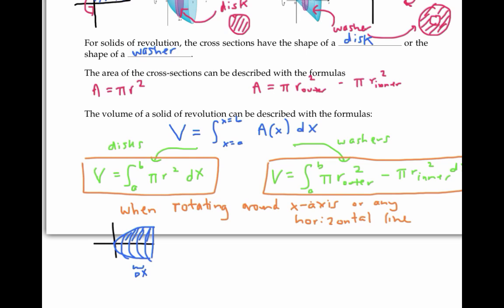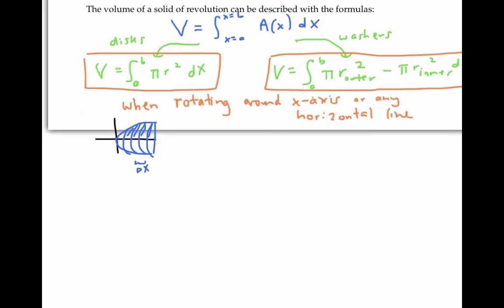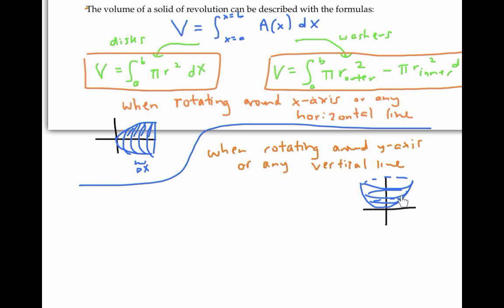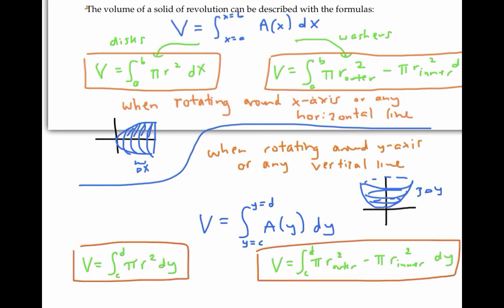If instead we want to rotate around the y-axis or a vertical line, then our disk or washer cross sections are going to be perpendicular to the y-axis and are going to be thin in the y direction. So when rotating around the y-axis or a vertical line, we'll need to do our integral with respect to y. Our cross-sectional area will be a function of y, we'll integrate dy, and our bounds of integration will have to be y values. We'll just have to calculate our radii and bounds of integration in terms of y instead of x.